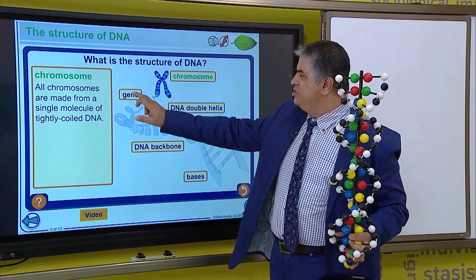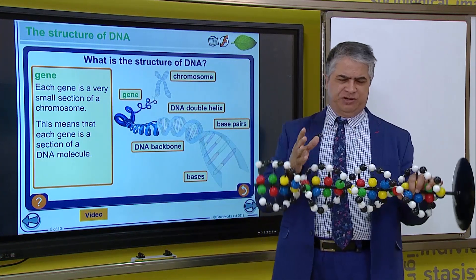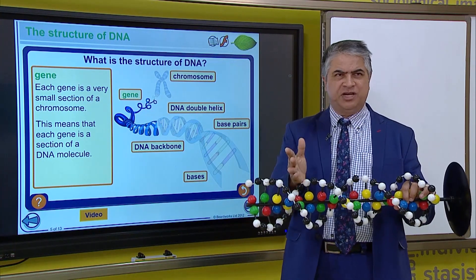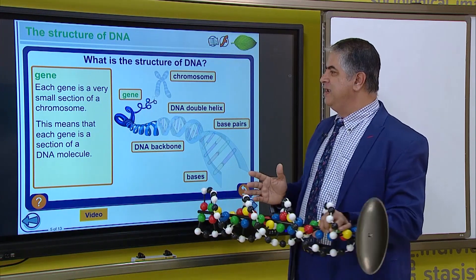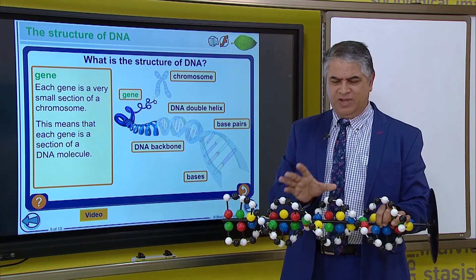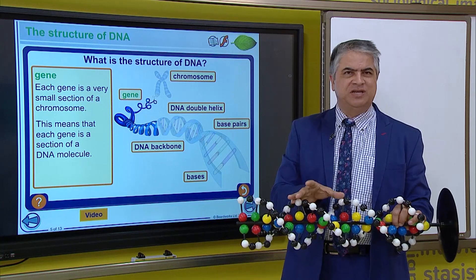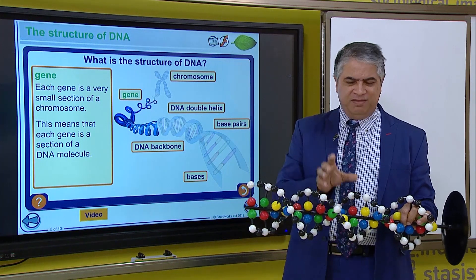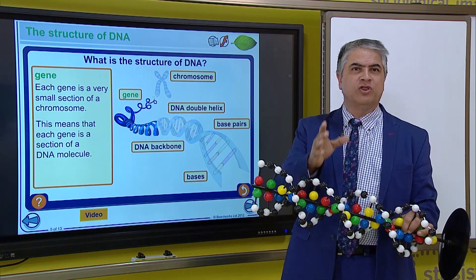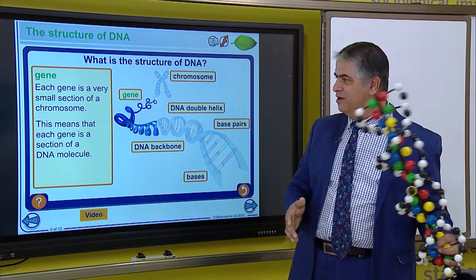Now, the gene is a small section, a small section of the DNA molecule. Now, this small section is called a gene. And this gene has the code for the protein that is required.